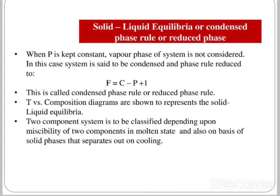Solid-liquid equilibrium or condensed phase rule: when pressure is kept constant, the vapour phase of the system is not considered. In this case, the system is said to be condensed and the phase rule reduces to F equals C minus P plus 1. This is called the condensed phase rule or reduced phase rule. Temperature vs. composition diagrams are used to represent solid-liquid equilibria. Two-component systems are classified depending on the miscibility of components in the molten state and the solid phase that separates on cooling.